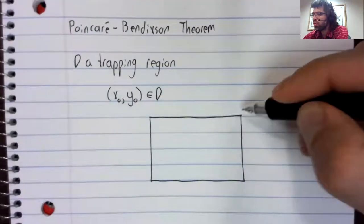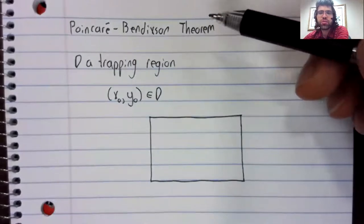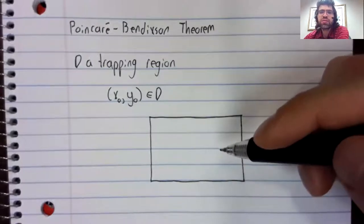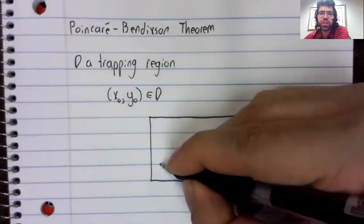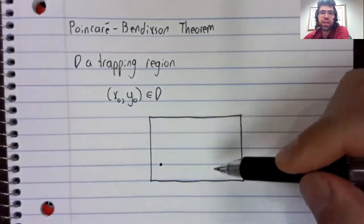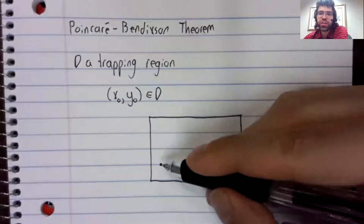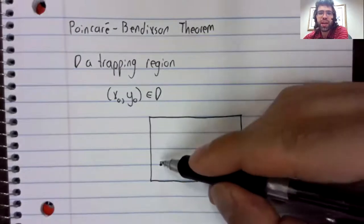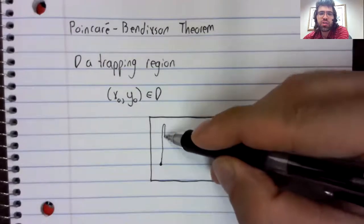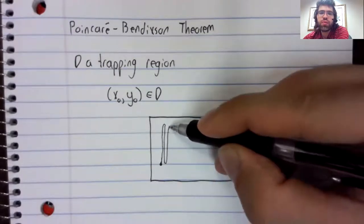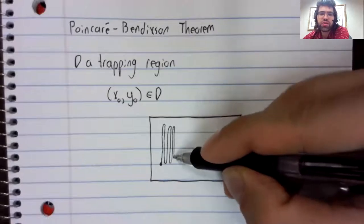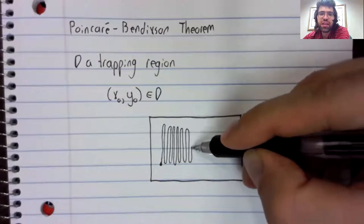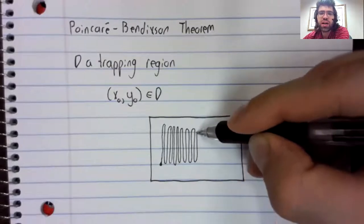And the Poincaré-Bendixson Theorem answers the question: what kind of behaviors can we expect from this trajectory? I mean, we know it's stuck in this trapping region, but maybe it still manages to exhibit complicated behavior. Like maybe it does some sine of one over X thing, where it's stuck in this trapping region, but we see infinitely many oscillations as time passes.